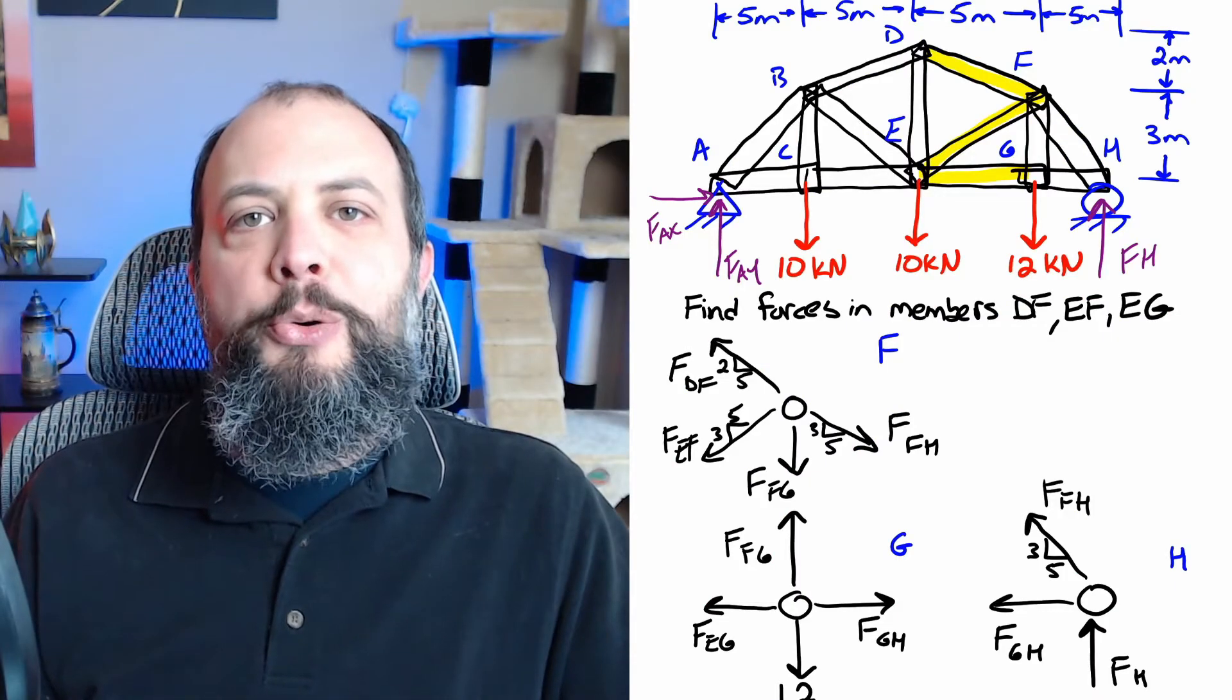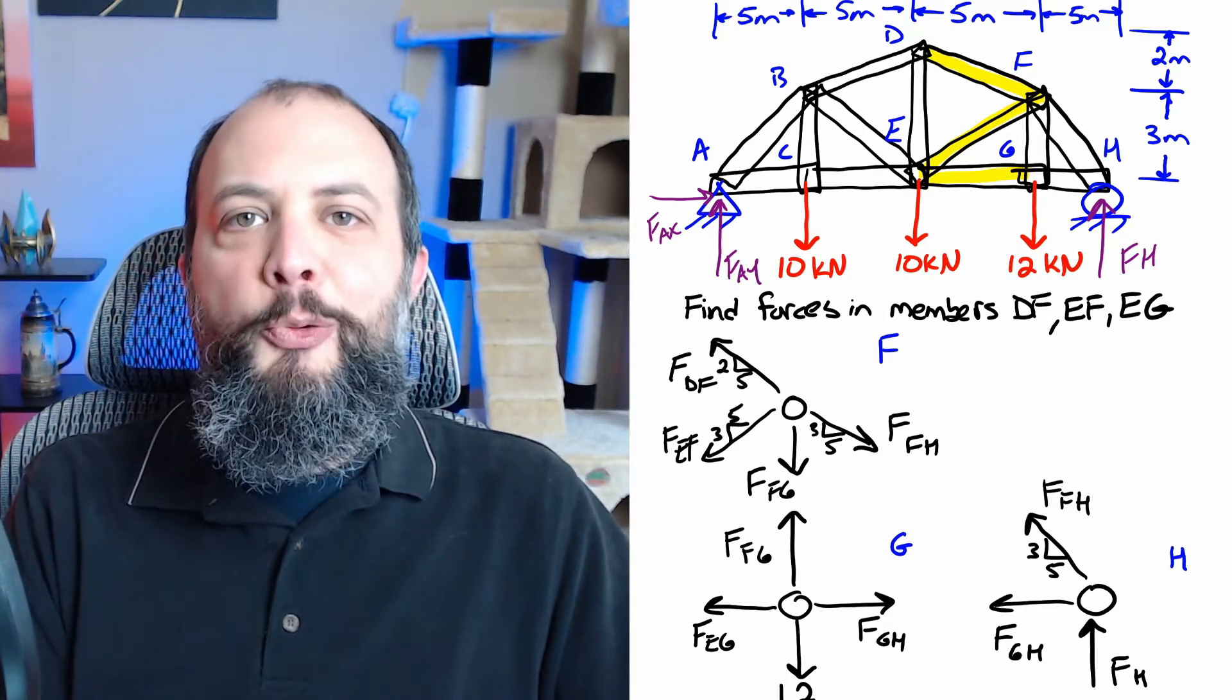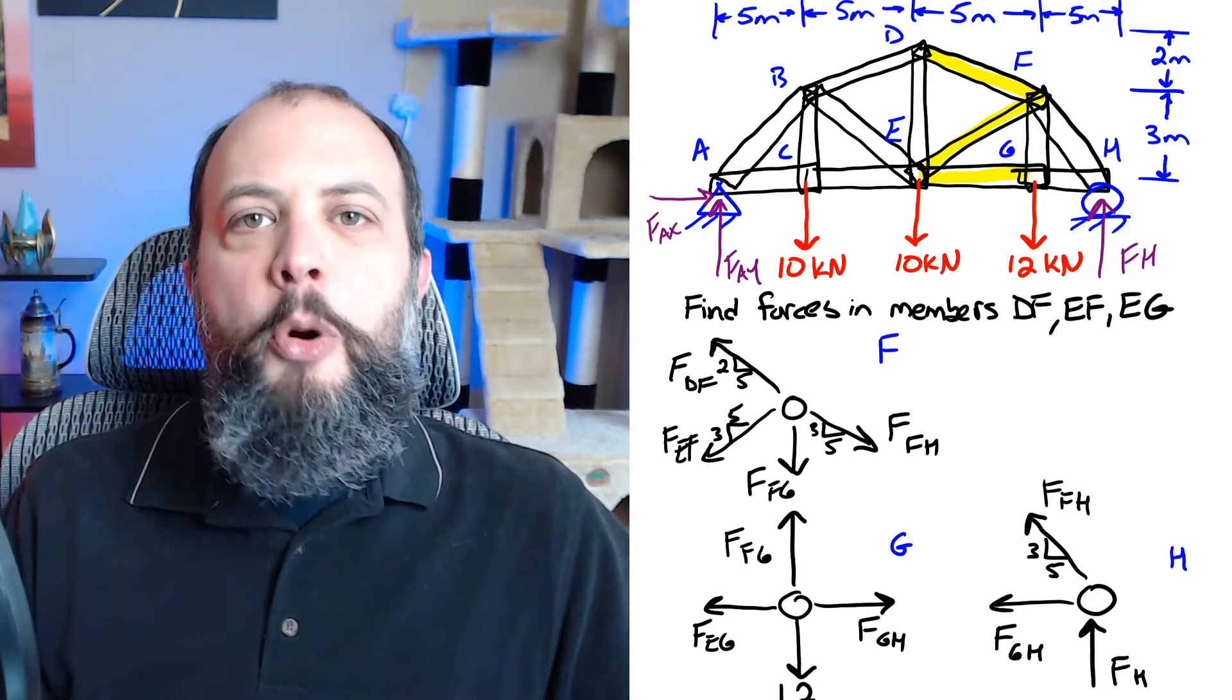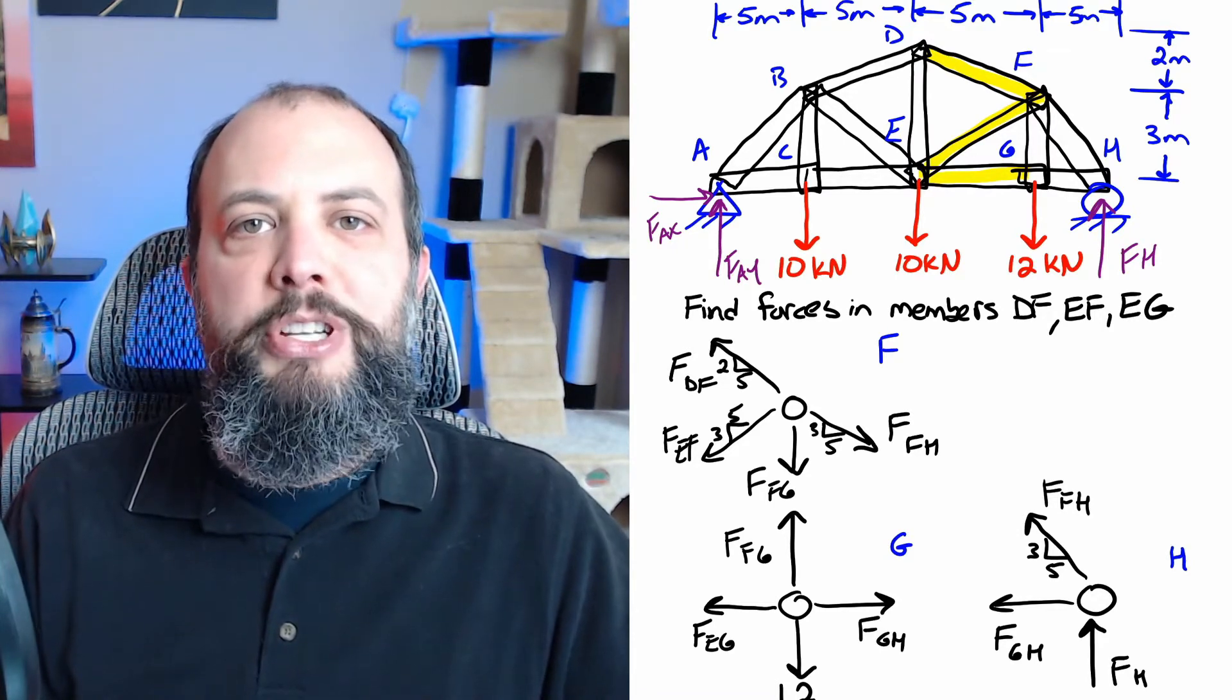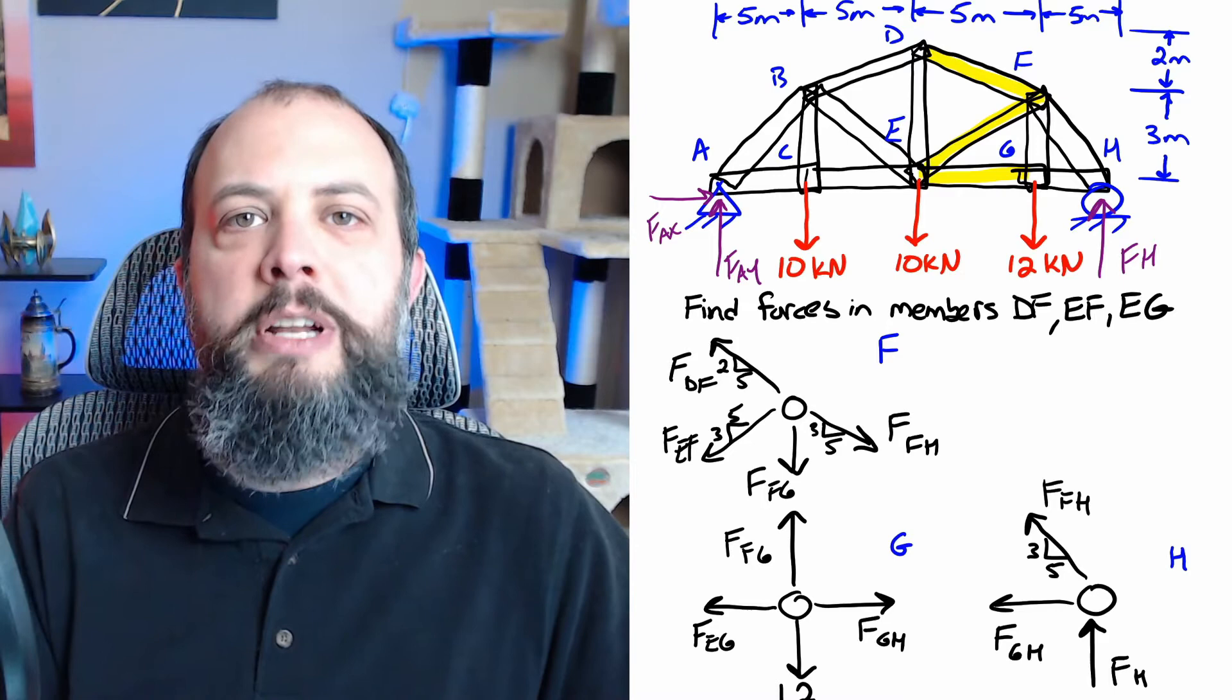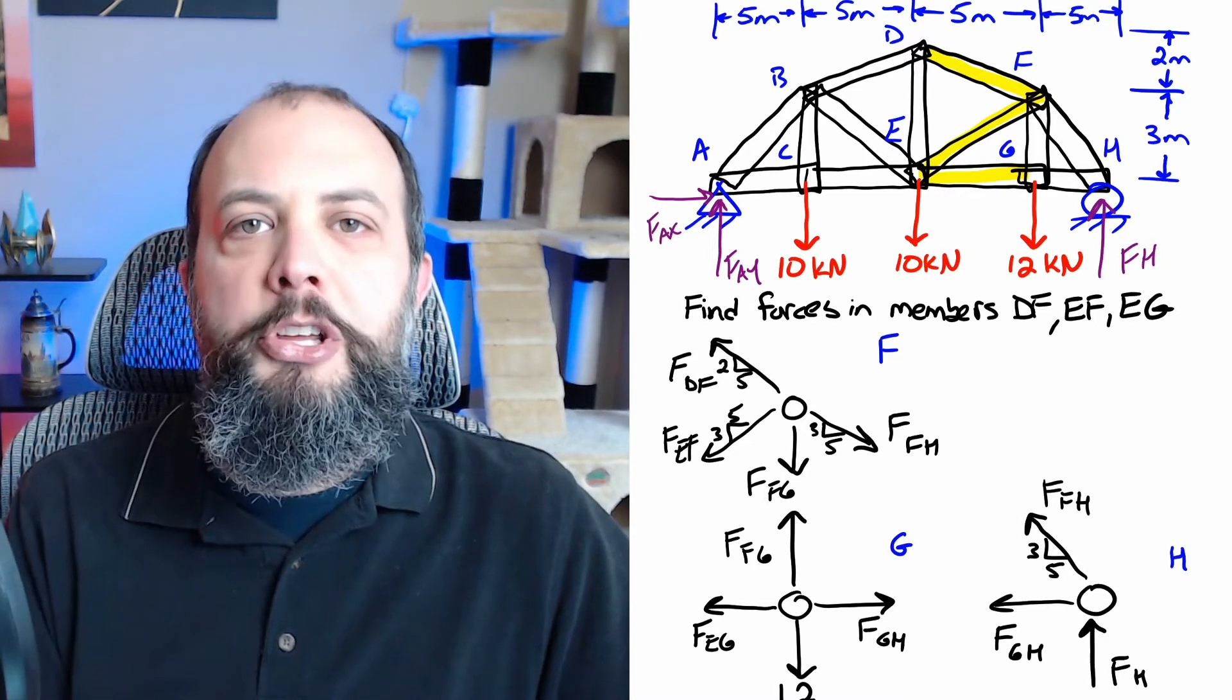For method of joints you almost always have to start at one of your reaction forces and then zigzag your way through the truss to get to the forces in the middle that you're actually trying to find. The reason this happens is that in particle equilibrium you only have two equations sum of forces in X and sum of forces in Y equals zero which means you can only solve for two unknowns. So if you look at a joint and there are more than two unknowns you can't start there you have to start at a different point and work your way in.